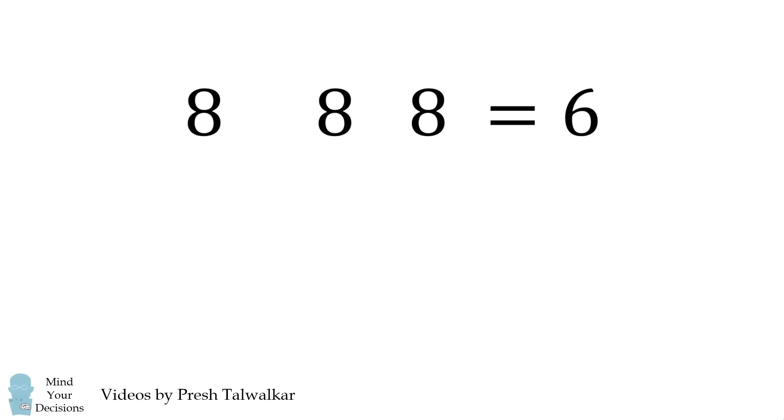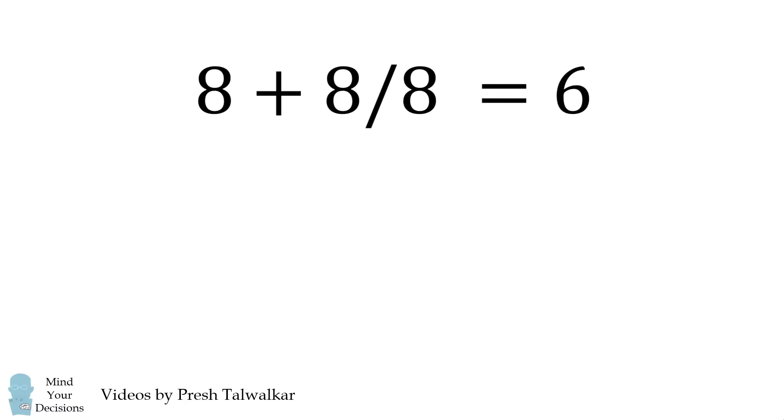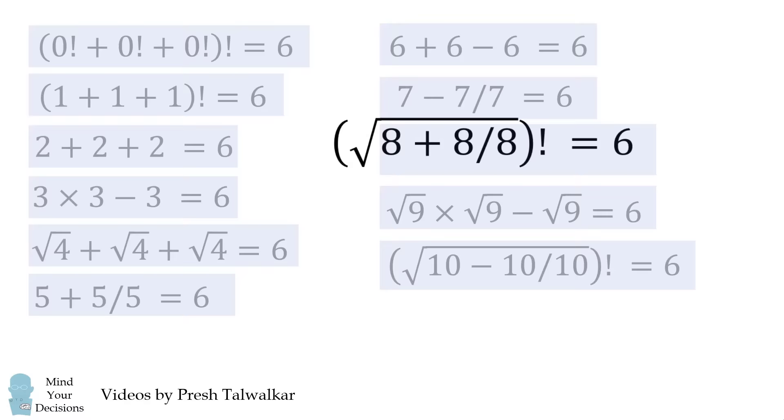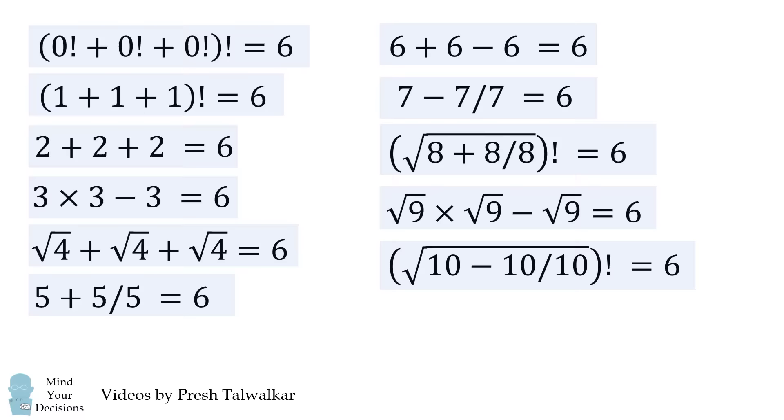But another way that you could solve this is you could take 8 plus 8 over 8 and that'll be equal to 9. We then take the square root of 9, which will be equal to 3. And then we take the factorial of 3 and that's equal to 6. So, that's it. We figured out how to get 6 in each of these equations.